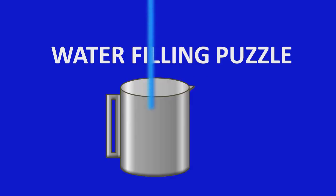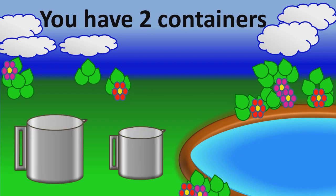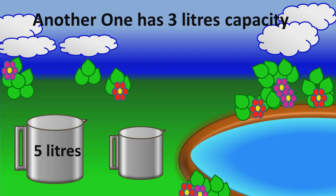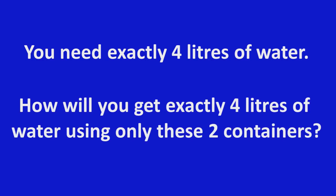Today's puzzle is Water Filling Puzzle. You have two containers. One has 5 liters capacity, another one has 3 liters capacity. You need exactly 4 liters of water. How will you get exactly 4 liters of water using only these two containers?